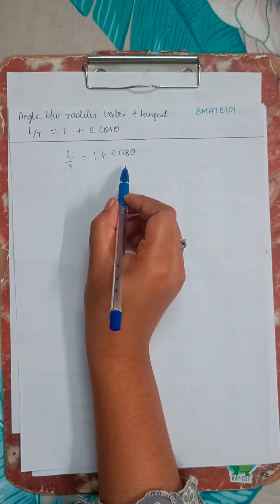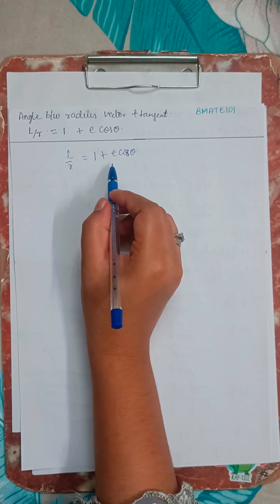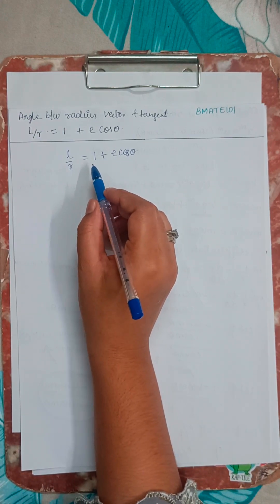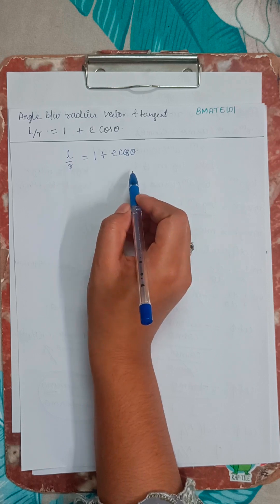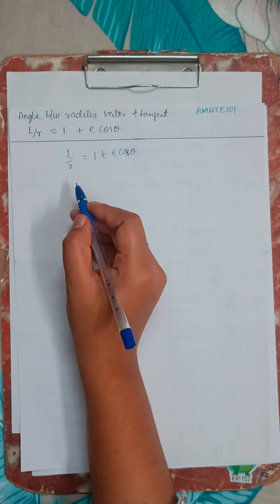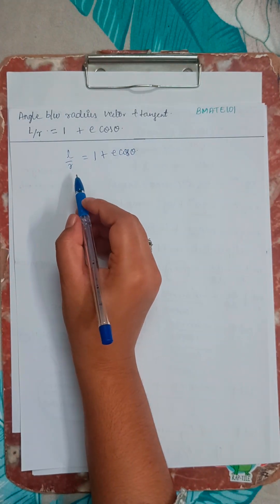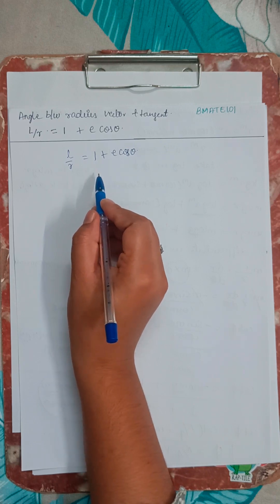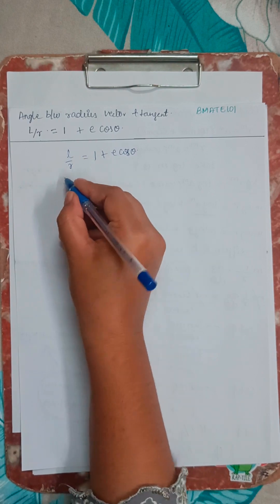So this is the curve given. For this we need to find the angle between the radius vector and the tangent. Okay, so we will use the previous method only. Do not get tensed by seeing this curve. So it is simple.